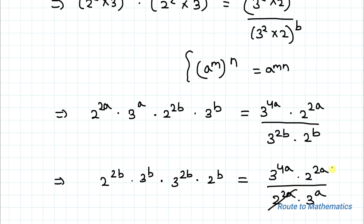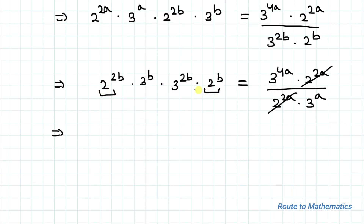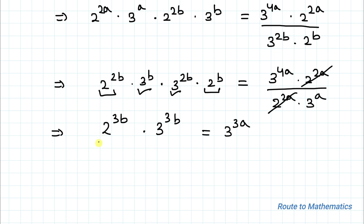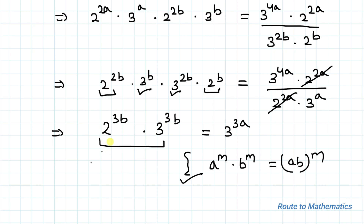Here 2 to the power 2a appears on both sides, so they cancel out. By cross multiplication, I can write: 2 to the power 2b × 3 to the power b × 3 to the power 2b × 2 to the power b on the left side. Since bases are the same, powers get added: 2 to the power 3b and 3 to the power 3b. Applying the law a to the power m × b to the power m = (ab) to the power m, I get 6 to the power 3b equals 3 to the power 3a.